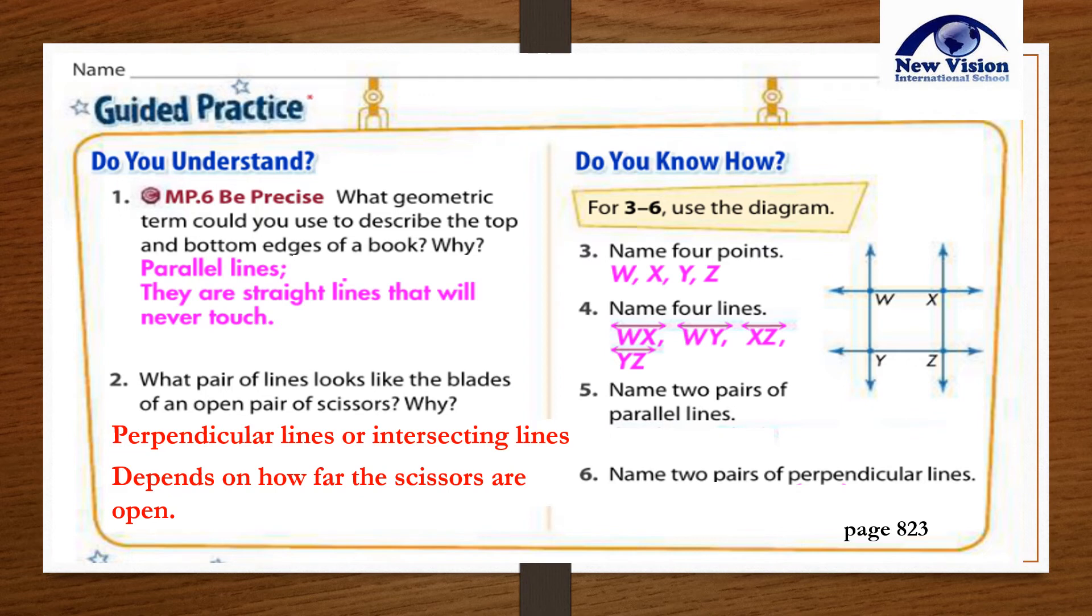Number five: Name two pairs of parallel lines. Again, parallel lines never intersect. Answer: Line WY and line XZ. Another pair: Line WX and line YZ.